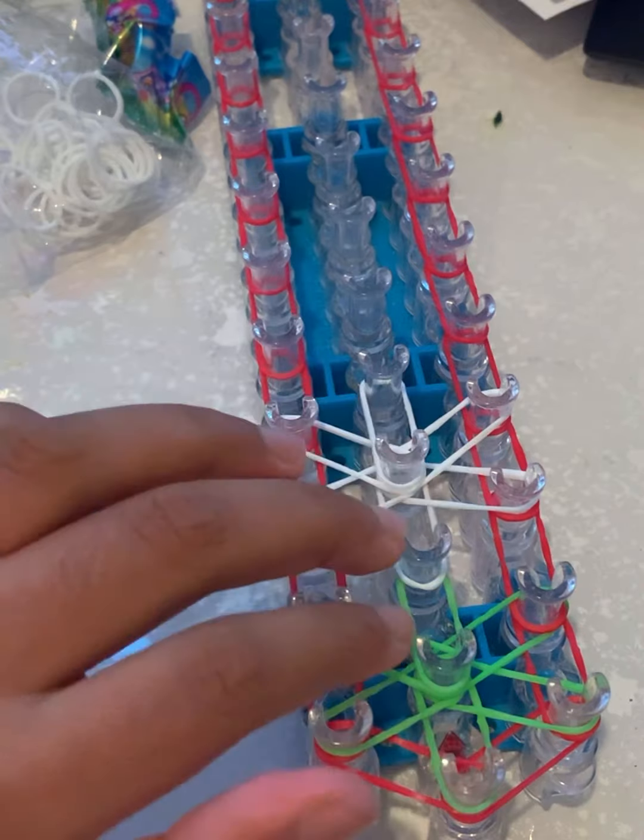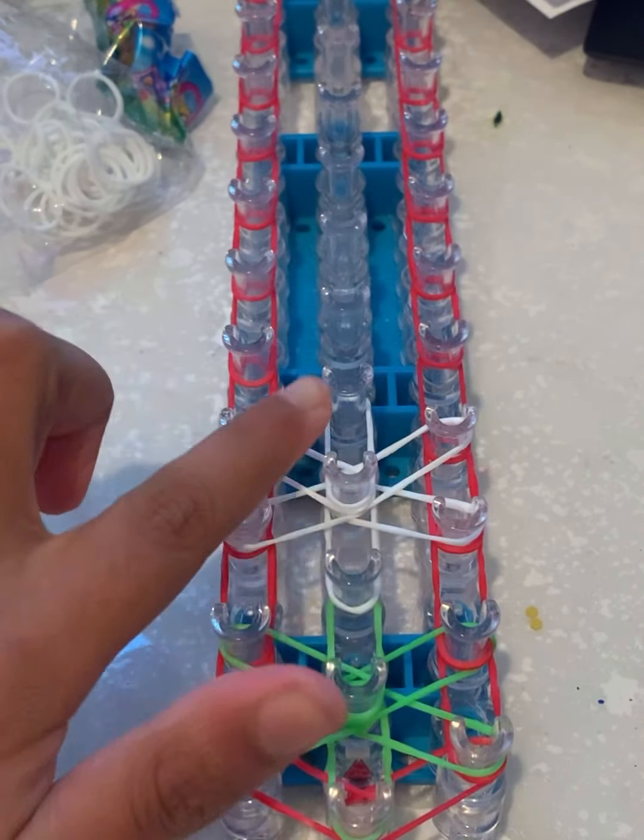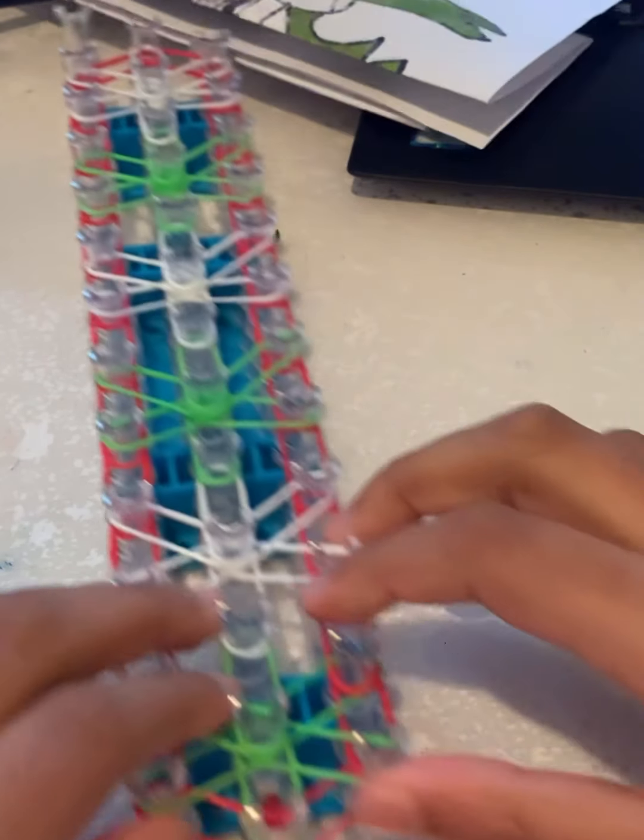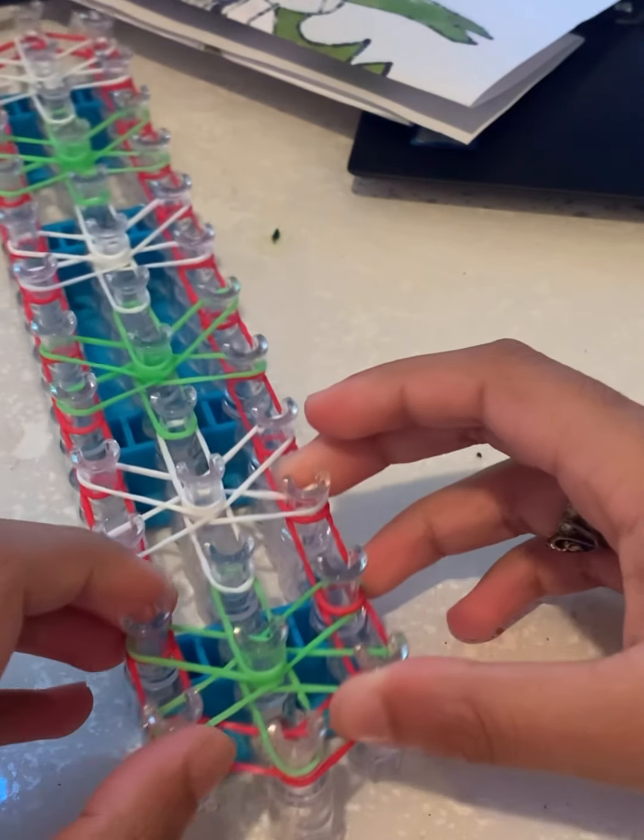Like that, and then you continue that pattern for all the starbursts down your loom. Now I finished doing all of the starbursts down my loom, so here's how it looks.